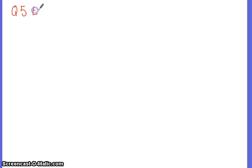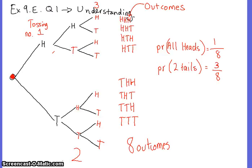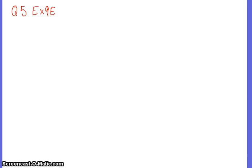So we're looking at question five, exercise nine E. On this tree diagram, tossing a coin was pretty easy — there were only two possible outcomes every time you tossed. The issue becomes apparent when it might be, say, getting marbles out of a hat.